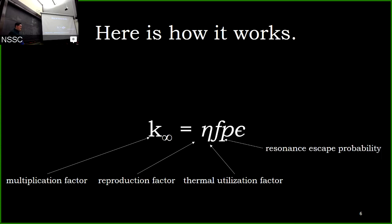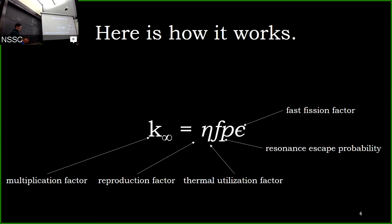The next thing is the resonance escape probability (p). From the last lecture there was a graph showing the probability that fission will happen based on how fast the neutron is going. There's an area called resonance, and as a neutron slows down it has a probability of being captured before it gets to the point where it causes fission. So the resonance escape probability is the probability that a neutron will slow down without getting captured in a way that won't produce fission. Finally, the fast fission factor (ε) is a factor that tells you the total number of fission neutrons compared to the number of fissions from neutrons specifically that have slowed down.